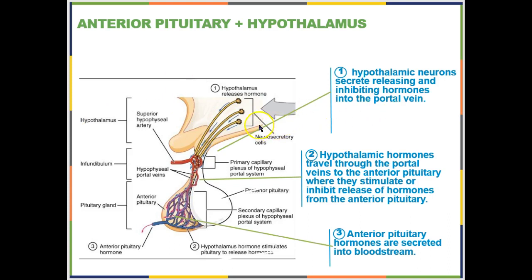Generally speaking, you have neurons in the hypothalamus that monitor different bodily processes. In response to that, they release different regulatory hormones which pass through this portal vein and hit the anterior pituitary, and then regulate the release of hormones from the anterior pituitary.